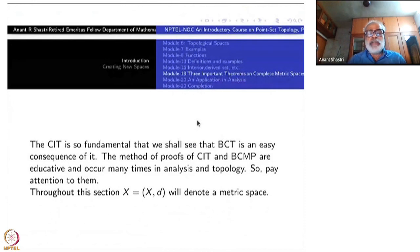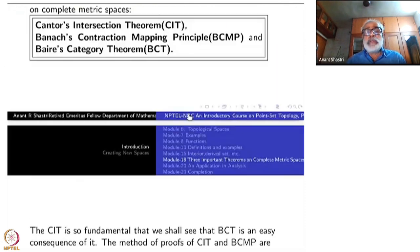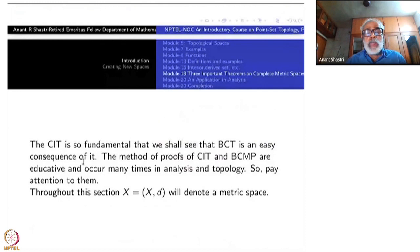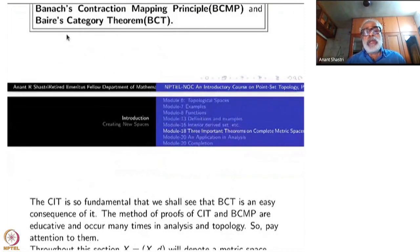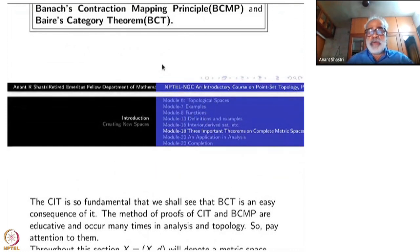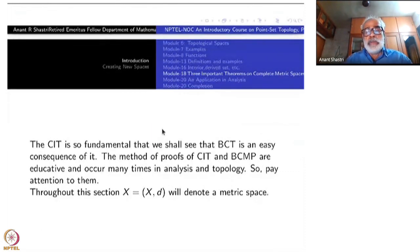The Cantor's intersection theorem is so fundamental that even in the proof of Baer's category theorem we will be using it. Banach's contraction mapping theorem is slightly of different flavor. It doesn't use CIT directly.